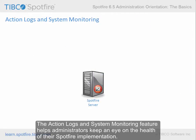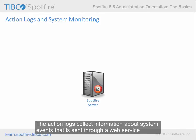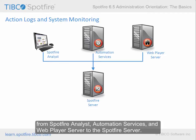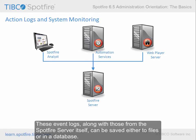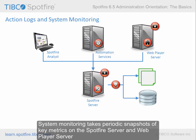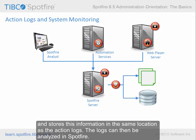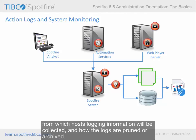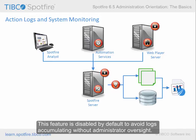The action logs and system monitoring feature helps administrators keep an eye on the health of their Spotfire implementation. The action logs collect information about system events that is sent through a web service from Spotfire Analyst, automation services, and web player server to the Spotfire server. These event logs, along with those from the Spotfire server itself, can be saved either to files or in a database. System monitoring takes periodic snapshots of key metrics on the Spotfire server and web player server and stores this information in the same location as the action logs. The logs can then be analyzed in Spotfire. Administrators have many options for how to configure this feature, including which events and system statistics should be logged, from which hosts logging information will be collected, and how the logs are pruned or archived. This feature is disabled by default to avoid logs accumulating without administrator oversight.